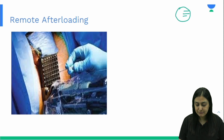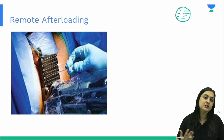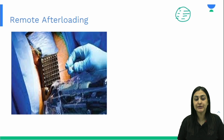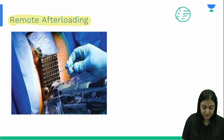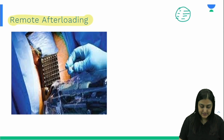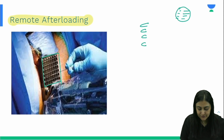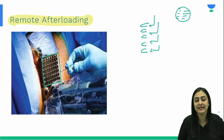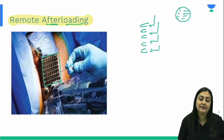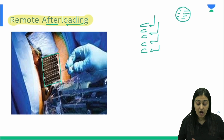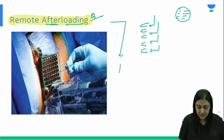In interstitial brachytherapy, radioactive isotopes are placed within the prostate, which risks exposing the surgeon. To prevent this, a technique called remote after-loading is used. Empty pellets are first placed into the grid, and then through a robotic arm the radioactive isotopes are inserted afterward. Remote after-loading is practiced in brachytherapy and is a repeat exam question.